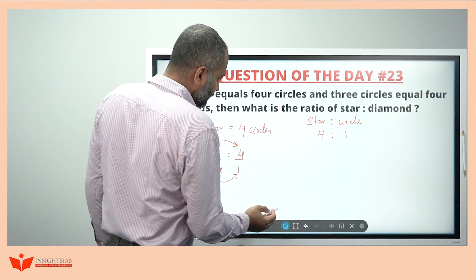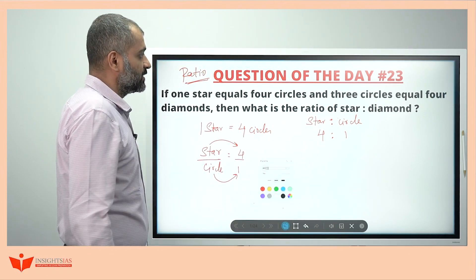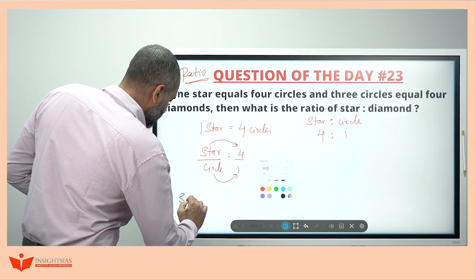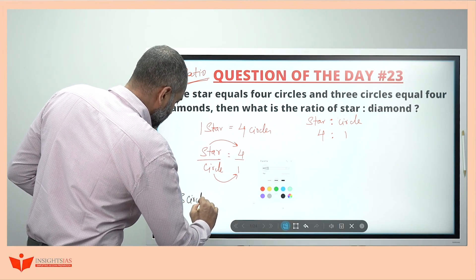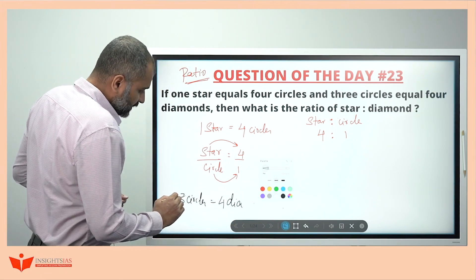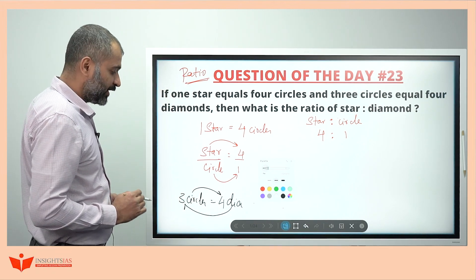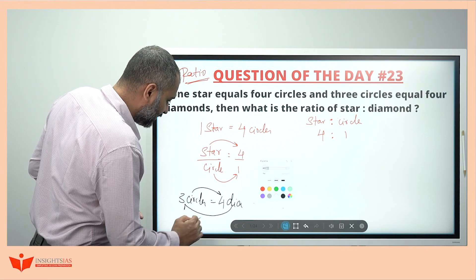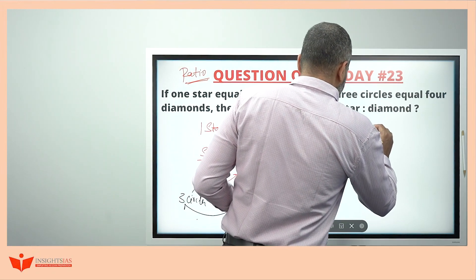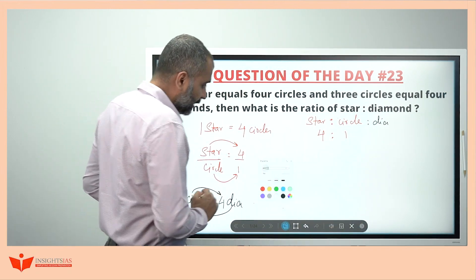Similarly, the next part of the data says three circles equals four diamonds. So can I write circle is four and diamond is three? Circle by diamond equals four by three — that is, circle to diamond is in the ratio four to three.